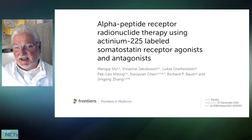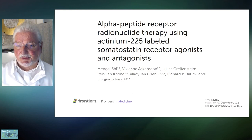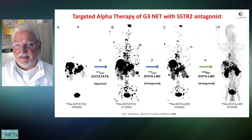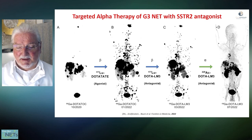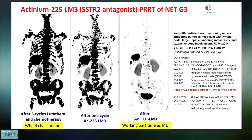Those interested can read an extensive chapter we recently published on alpha PRRT using Actinium-225 agonists and antagonists. There are examples like this young man from Norway with a lot of liver metastases and extrahepatic disease, progressing despite lutetium treatment, with many bone metastases. He was treated with lutetium and later with actinium, and there was a good response to the combined lutetium and alpha treatment.